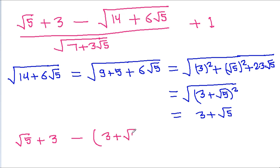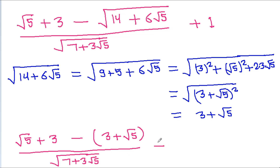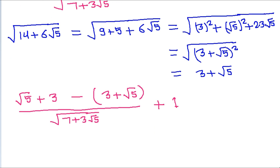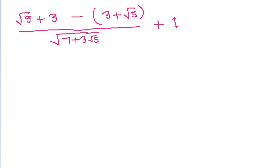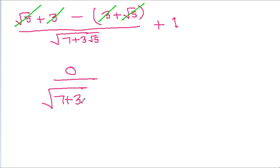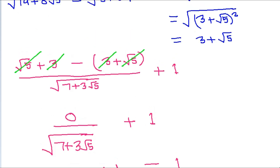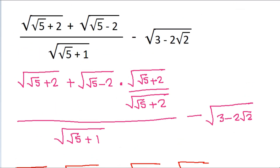So this will be root 5 plus 3 minus, which is equal to 3 plus root 5, over a square root of (7 plus 3 root 5) plus 1. The 3 and root 5 cancel, giving 0 over 1, divided by a square root of (7 plus 3 root 5) plus 1, and it is 0 plus 1, which equals 1.